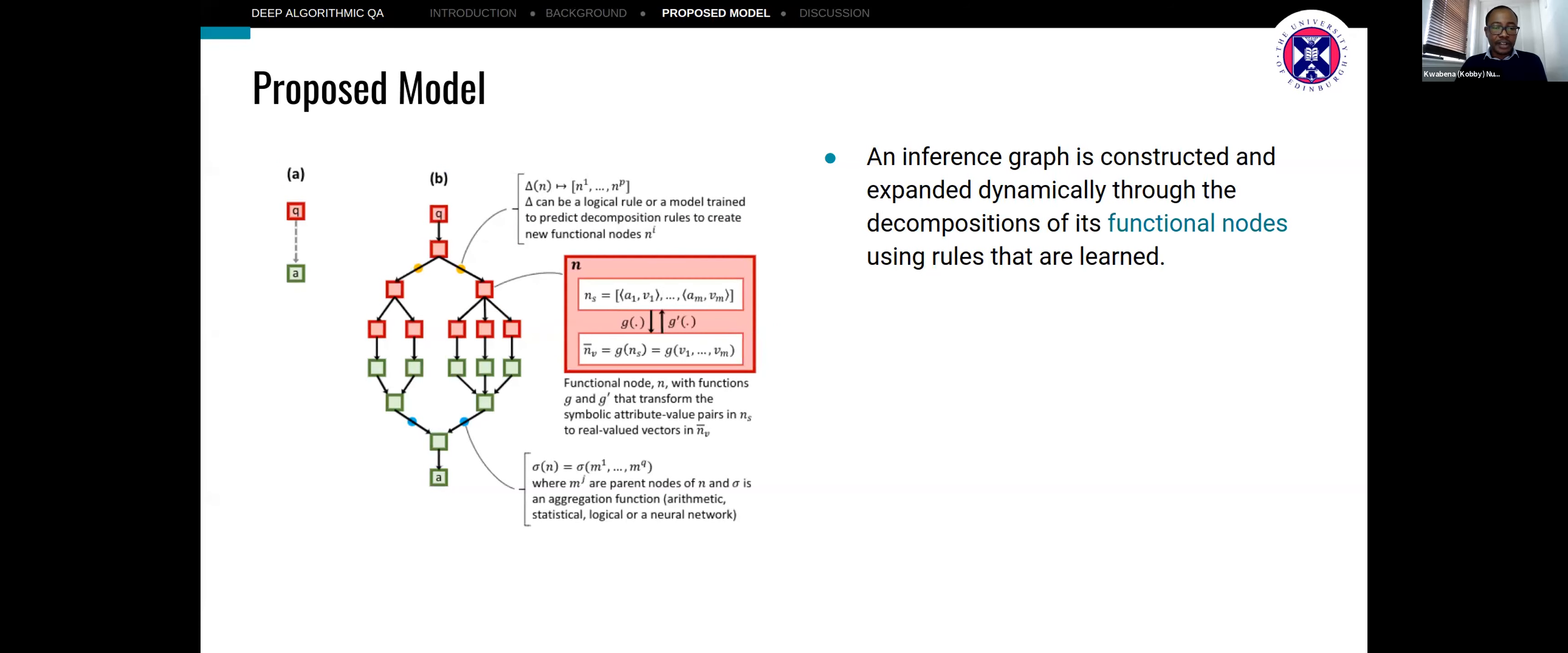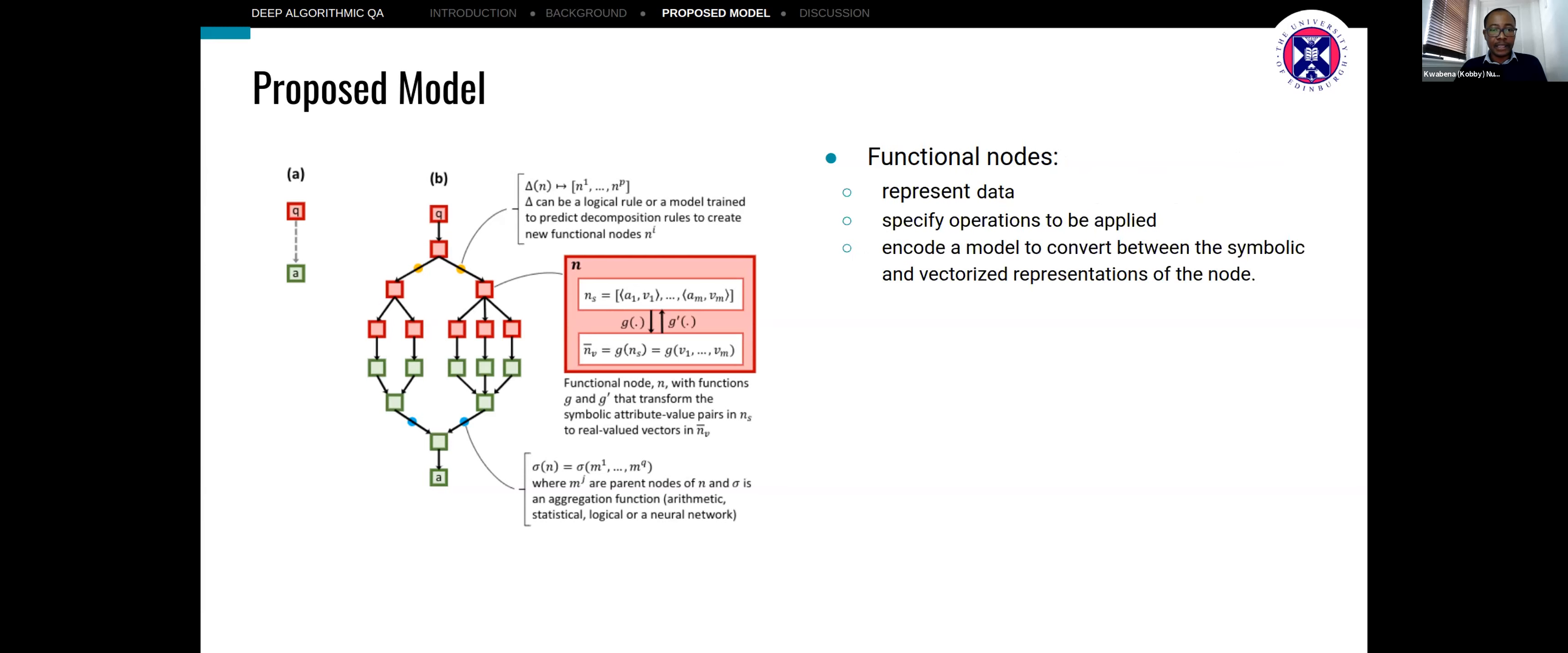At the core of our model is the inference graph, which is constructed and expanded dynamically by decomposing what we call functional nodes using rules that we can learn from the graph and examples. Functional nodes represent data as well as operations that can be applied to successor or descendant nodes. The functional nodes also encode some model that allows it to convert between a symbolic representation of its content as well as a vectorized representation of it.